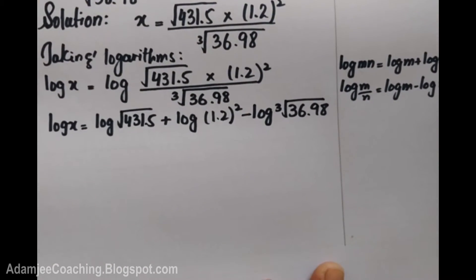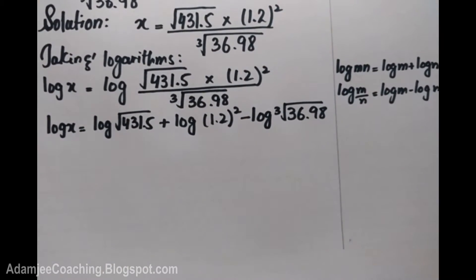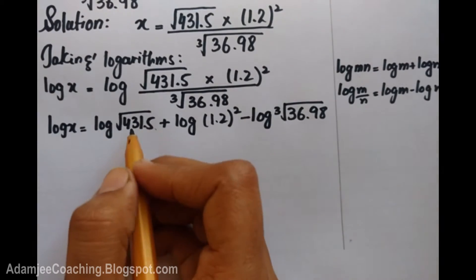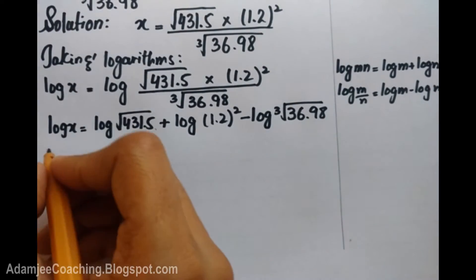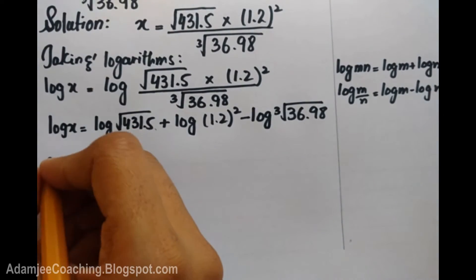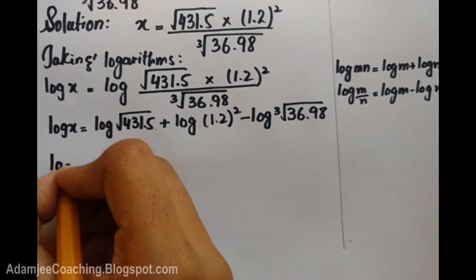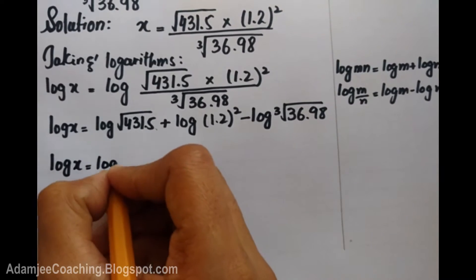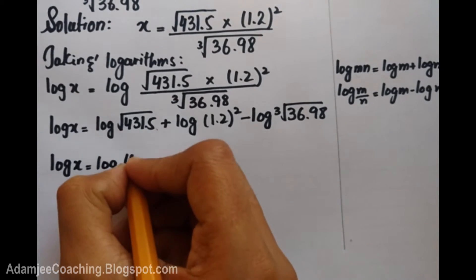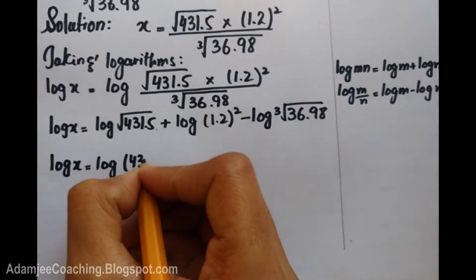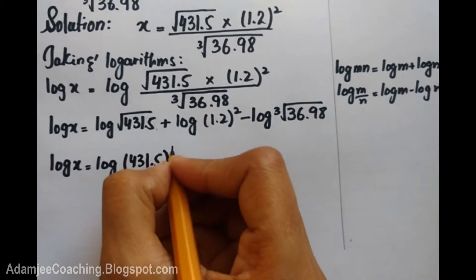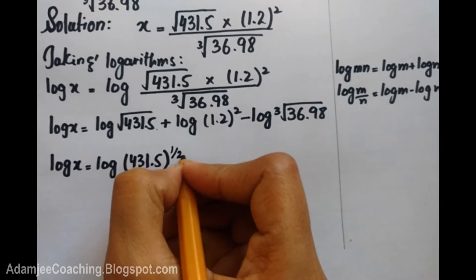Now going to our question: under root — if we open the square root, our power is going to be one half. So the square root of 431.5 becomes 431.5 to the power of one half.